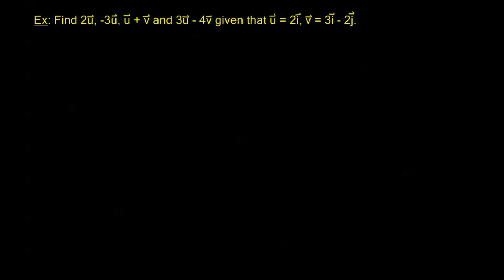Find 2U, -3U, the sum U plus V, and the difference 3U minus 4V, given that U equals 2I minus 2J. This is where this form comes in really handy when you have these mixed expressions like this.